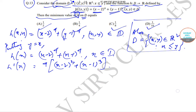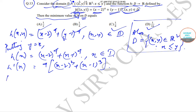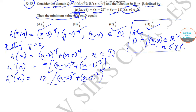This is what we have got from h'(x). Similarly, if we find h''(x), this will give us 12(x − 2)² + 12(x − 1)², and this part is always greater than 0. So for whatever value h'(x) equals 0, at that value h''(x) will also be greater than 0, meaning h(x) is minimum there.